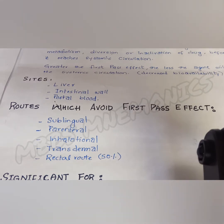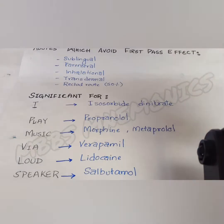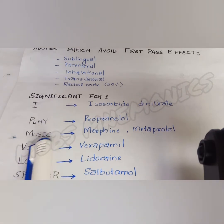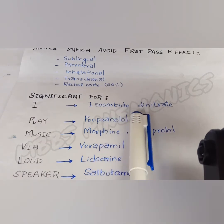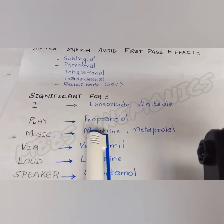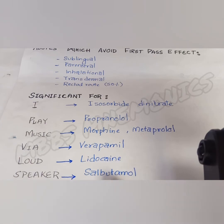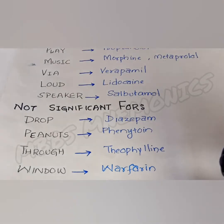Dose adjustment would be necessary in these cases because bioavailability would be more. There are some drugs for which the first pass effect is very significant. The mnemonic for these drugs is 'I play music via loudspeaker': I — isosorbide dinitrate, P — propranolol, M — morphine and metoprolol, V — verapamil, L — lidocaine, S — salbutamol.